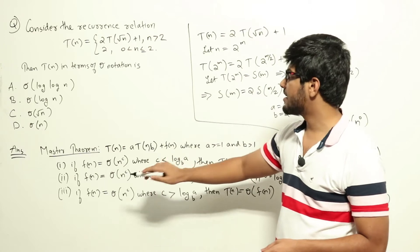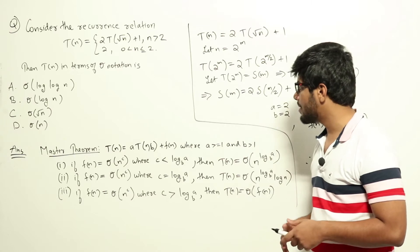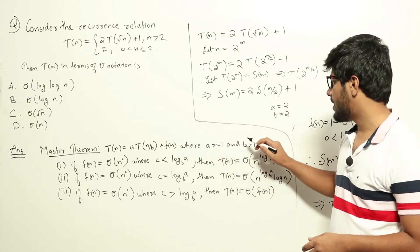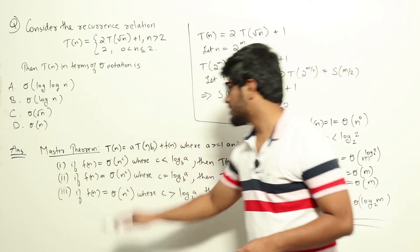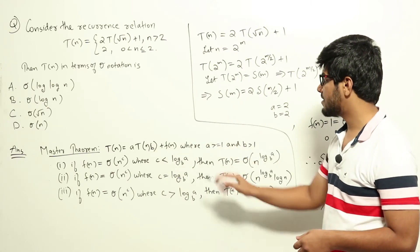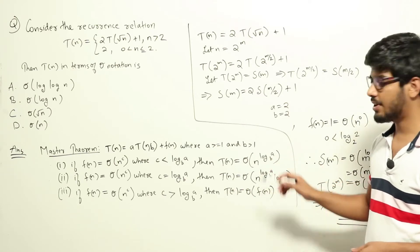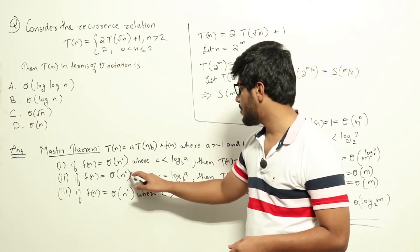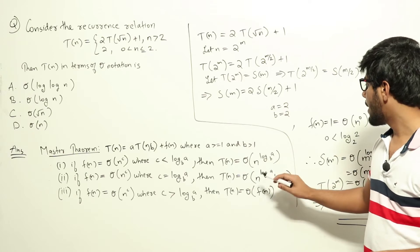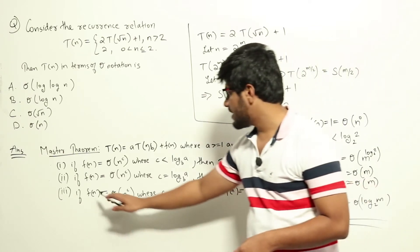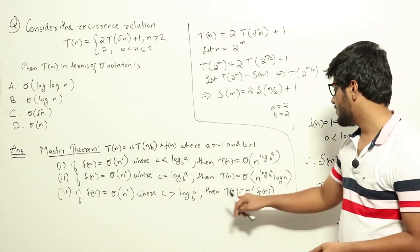One way of solving recurrence relations is using Master's Theorem. Master's Theorem states that if we have a recurrence relation of the form T(n) = a·T(n/b) + f(n), where a ≥ 1 and b > 1, then we have three cases. Case 1: if f(n) = Θ(n^c) where c < log_b(a), then T(n) = Θ(n^(log_b(a))). Case 2: if c = log_b(a), then T(n) = Θ(n^(log_b(a)) · log n). Case 3: if c > log_b(a), then T(n) = Θ(f(n)).